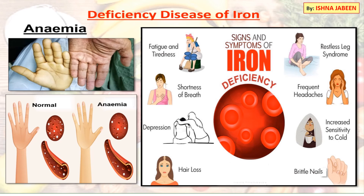Deficiency disease of iron is anemia — a disease where the red blood cell count or hemoglobin is less than normal. The hand of a healthy person is pinkish or reddish, while the hand of an anemic person shows paleness because red blood cell count is less than normal. Symptoms of iron deficiency include fatigue, shortness of breath, depression, hair loss, restless leg syndrome, frequent headaches, increased sensitivity to cold, and brittle nails.